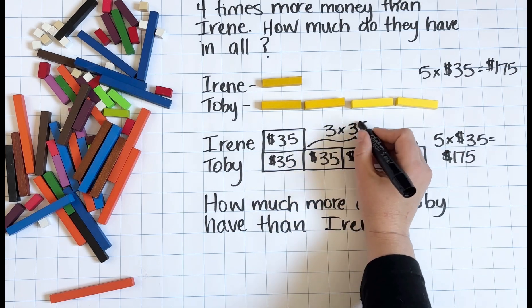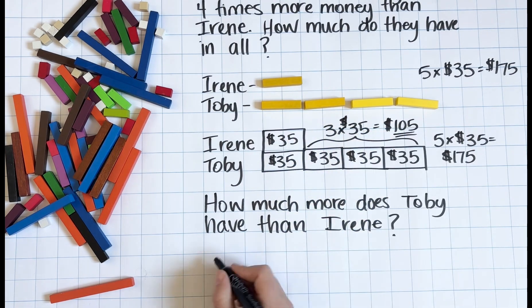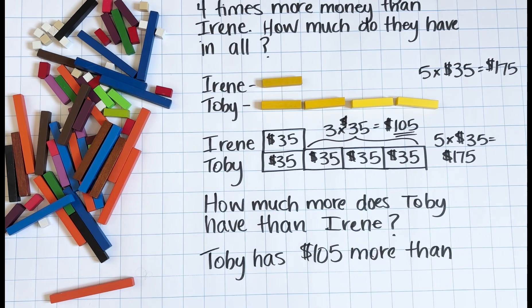What if the question asked how much more Toby has than Irene? Again, you can see how the bar model makes this really simple to picture.